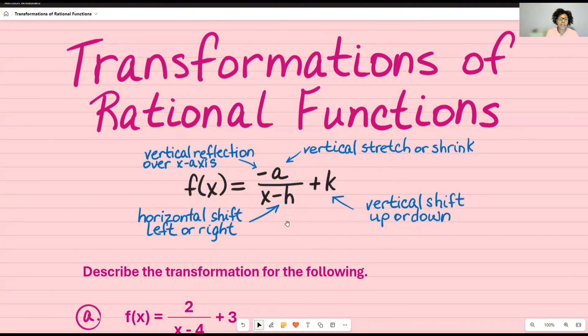X minus h in the bottom, the h portion is going to tell us whether or not it's going to be a horizontal shift left or right, and it's always the opposite sign of what's shown. So if it were x plus 4, then what would x have to be to make this equal zero? So it would be the opposite sign, negative 4. For this one, which tells you that it would be going to the left.